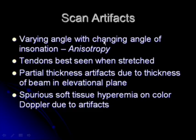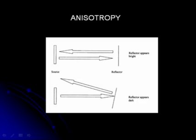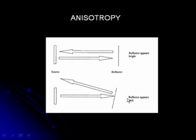The varying angle of insonation leads to the artifact of anisotropy. Tendons are also best seen when they are stretched. A stretched tendon will show its normal echo pattern and will be hyperechoic. When the sound beam is reflected completely back by a structure running at 90 degrees to the insonation angle, you get a very good reflection. However, if the tendon is going at an angle, you lose a large part of the returning echo, and the tendon appears as a dark structure. This is the principle of anisotropy.